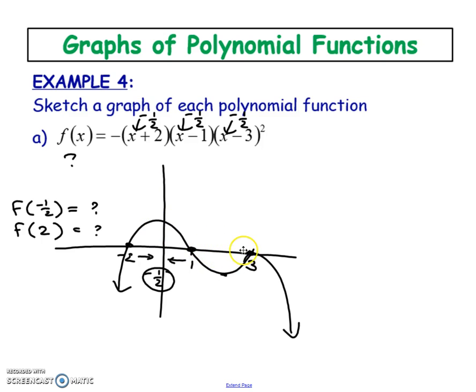Keep in mind that the average of the x-intercepts doesn't necessarily give you the exact peak location — the peak could be a little to the left or right, and the graph doesn't have to be symmetrical. The only way to get a truly accurate visualization is to graph it with a graphing calculator or other graphing technology, or to use calculus, which we won't cover in this video.